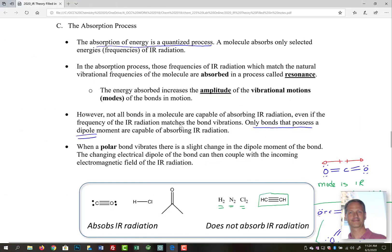The absorption process is actually pretty interesting. It's a quantized process—remember that only certain amounts of energy are allowed to be absorbed. In that absorption process, the frequencies of IR radiation which match the natural vibrational frequencies of the molecule are absorbed in a process called resonance. When that polar bond vibrates, there's a slight change in the dipole moment of that bond. That changing electrical dipole in the bond can couple with incoming electromagnetic radiation. When those two things couple together, we have resonance. That resonance changes the amplitude of the vibrational motion, the modes of the bonds, and we see an absorption process occur.